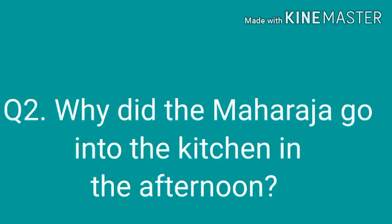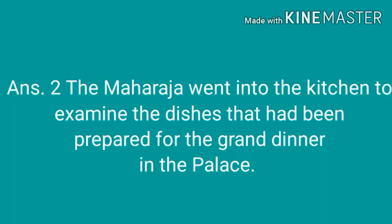Now come to question number 2: why did the Maharaja go into the kitchen in the afternoon? The answer is, the Maharaja went into the kitchen to examine the dishes that had been prepared for the grand dinner in the palace.